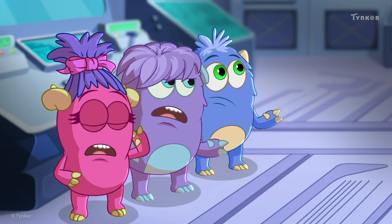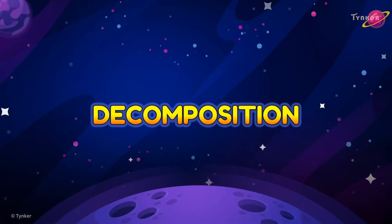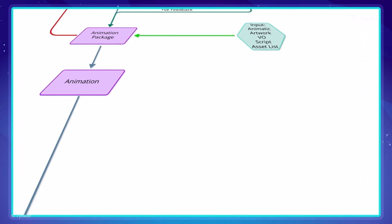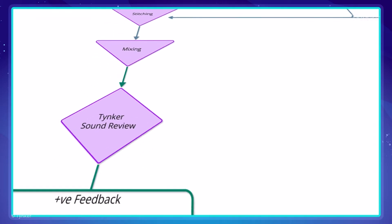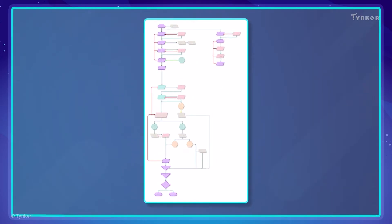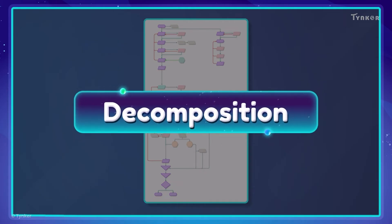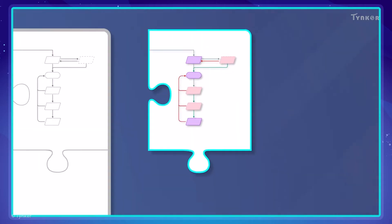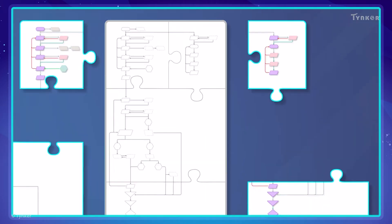Decomposition? Sometimes programmers have to create complicated algorithms to complete complex tasks. To do this, they simplify the task using decomposition. Decomposition is the process of breaking down a complex problem into smaller, simpler parts. This lets programmers focus on one thing at a time to solve the larger problem.